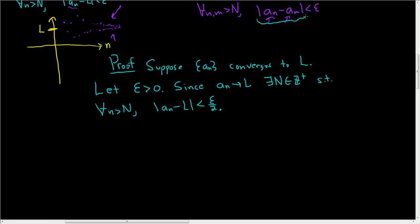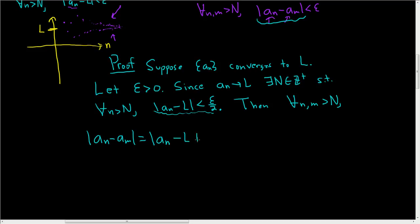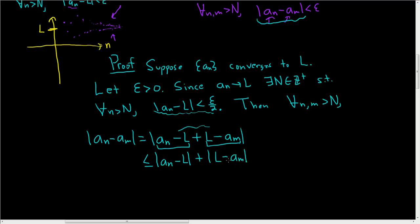So now we need to look at a_n minus a_m. For all little n and little m bigger than capital N, let's look at the absolute value of a_n minus a_m. We need to rewrite this and incorporate the inequality. The trick is to add and subtract L, so we can write this as a_n minus L plus L minus a_m. All we did was add 0. Now we use the triangle inequality on these two pieces, so this is less than or equal to the absolute value of a_n minus L plus the absolute value of L minus a_m, which equals the absolute value of a_n minus L plus the absolute value of a_m minus L.